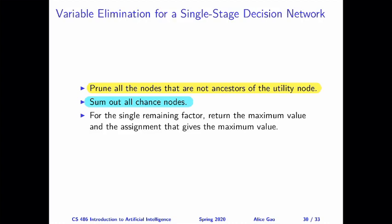After that, we will have a single remaining factor. And using that factor, we will determine our maximum expected utility and the assignment that gives the maximum expected utility. So the assignment here would be the decision that we make. Given our combined decision nodes, that would be the combination of the two decisions that we make that can maximize our expected utility.